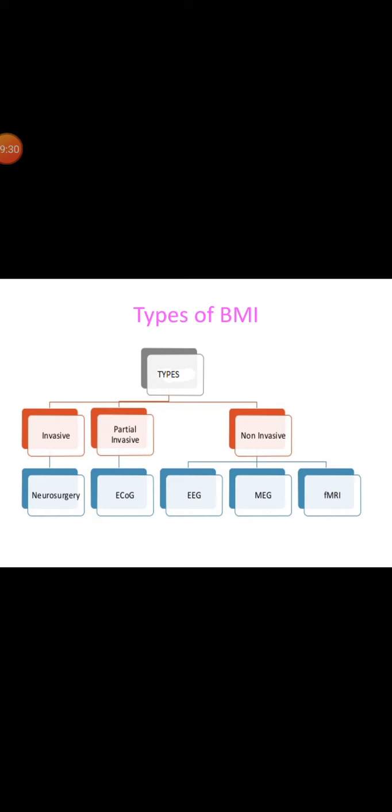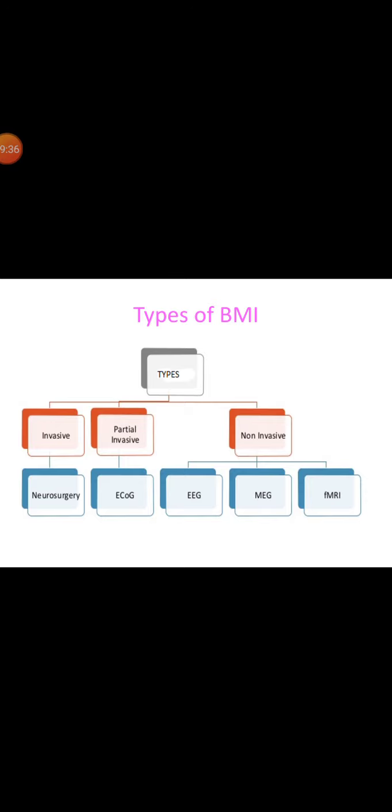These are the types of BMI. BMI can be classified into invasive, partially invasive and non-invasive methods. Invasive BCIs are implanted directly into the gray matter of the brain by neurosurgery. As they rest in the gray matter, invasive devices produce high quality signals of BCI devices. But scar tissue can build up causing the signal to become weaker or even lost as the body reacts to foreign objects in the brain.